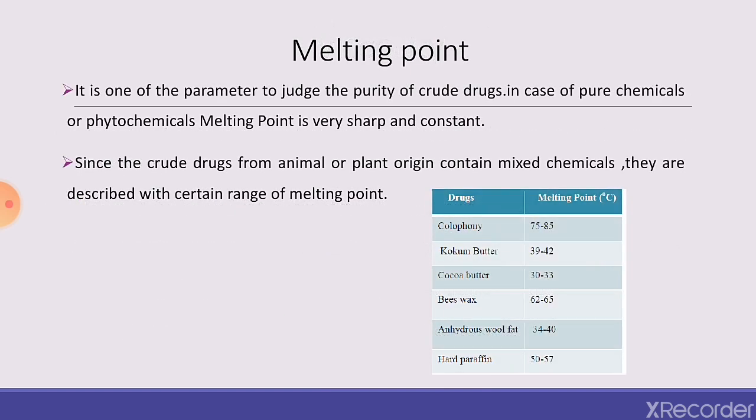The third physical method is determination of melting point. It is one of the parameters to judge the purity of crude drugs. In case of pure chemicals or phytochemicals, melting point is very sharp and constant. Since crude drugs from animal or plant origin contain mixed chemicals, they are described with a range of melting points. For example: colophony 75–85°C, cocoa butter 39–42°C, beeswax 62–65°C, anhydrous wool fat 34–40°C, and hard paraffin 50–57°C.